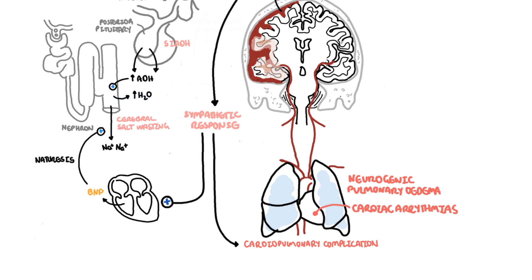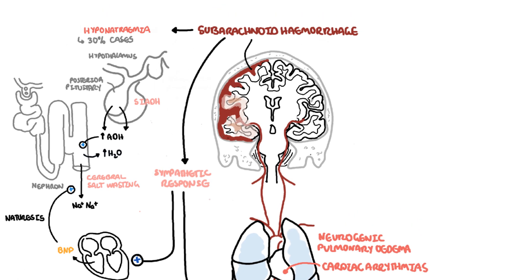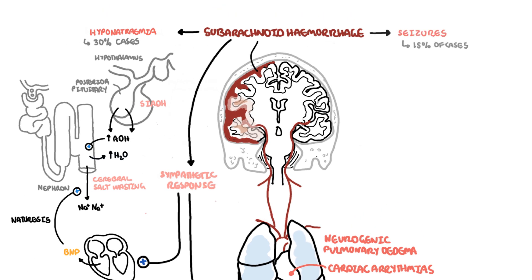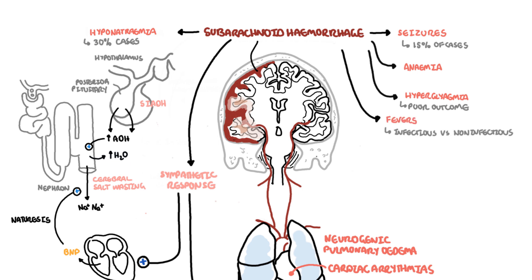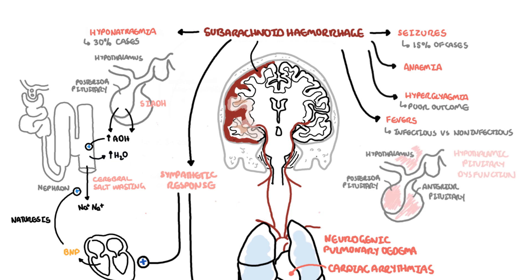Other complications of subarachnoid hemorrhage include seizures, anemia, hyperglycemia, and fevers. It's important to differentiate between infective and non-infective causes of fever. Finally, hypothalamic-pituitary dysfunction is also a recognized complication.